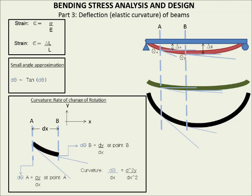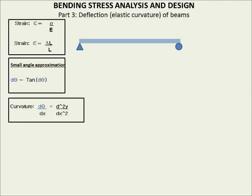A quick recap: all we've done so far is ask what measurements can we make to demonstrate the deformation a beam undergoes when it bends. We talked about a vertical drop delta at points A and B, the rotation theta A and theta B, and the rate of change of rotation — curvature — asking whether it's a gradual or rapid change in slope. We recalled three pertinent mathematical objects: strain, small angle approximation, and curvature. Armed with these three objects and knowledge from our previous two lectures, we're going to develop the elastic curvature theory of beams.